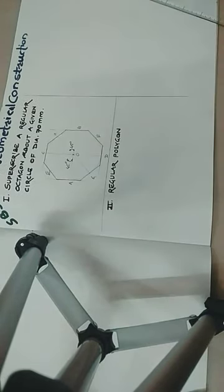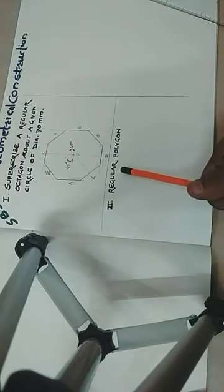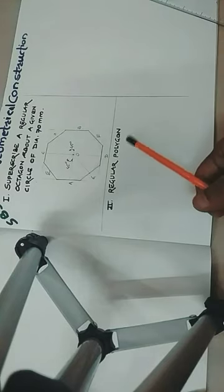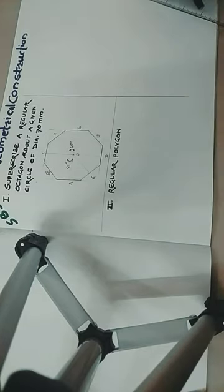Now second method, second type from this geometric construction. Draw a regular polygon. Now suppose over here a regular polygon hexagon is to be drawn. See the method. Suppose side of this hexagon is 30 millimeter. So what you are supposed to do - first of all draw the line AB equal to the length of the side, side of this hexagon, that is 30 millimeter.